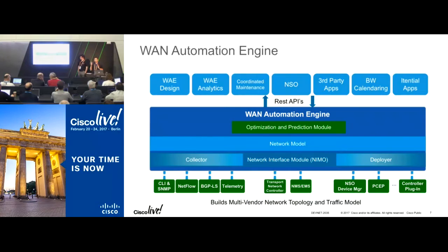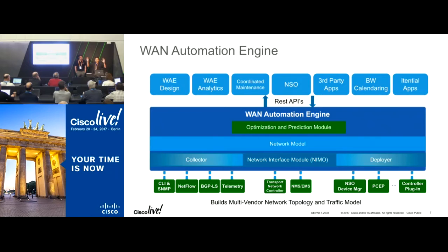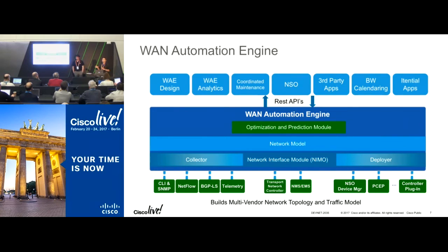Based on that optimization and prediction level, we expose those capabilities through an API, so any third-party application sitting on top can interface into our product using those APIs. One of the applications we have is our product itself — Way Design — which is a thick client that sits on your laptop, be it Mac, Linux, or Windows, and exercises those APIs from the thick client down to WAE to make simulation and optimization queries.